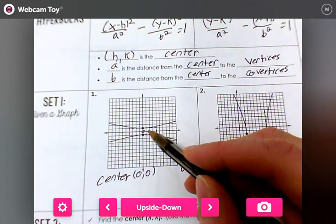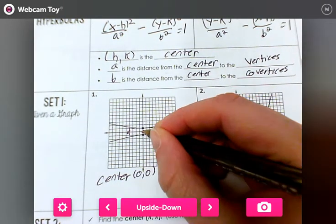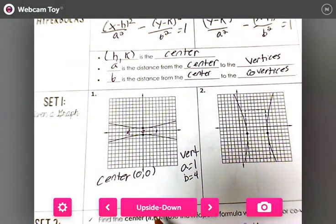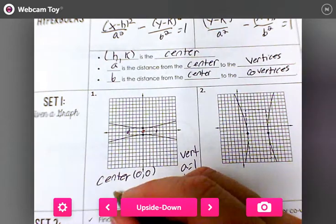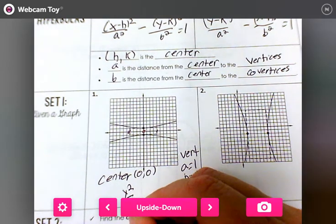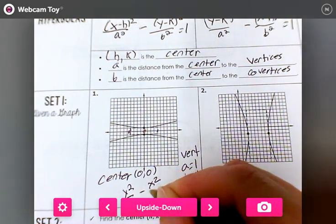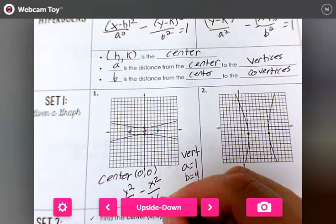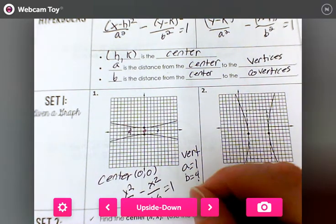These are 4 away. You see these right here? 1, 2, 3, 4. That's b. So now I should be able to put in the equation: y² over 1 minus x² over 4 times 4 is 16, equals 1. That's your standard form.